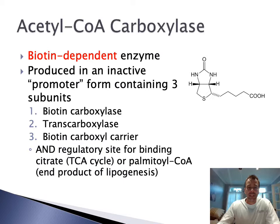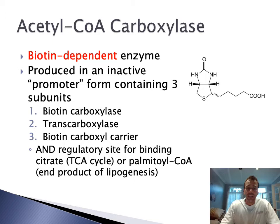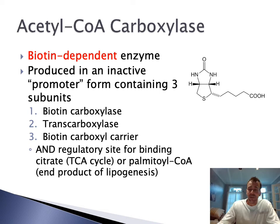Let's talk about the first stage: acetyl-CoA carboxylase. It's a biotin-dependent enzyme — here's a picture of biotin. It's produced in an inactive or protomer form containing three subunits: a biotin carboxylase, a transcarboxylase, and a biotin carboxyl carrier. There's also a regulatory site for binding citrate, which comes from the TCA cycle, or palmitoyl-CoA, which is the end product of lipogenesis. So it's used for regulation, tying it back to the earlier lectures on enzyme regulation.